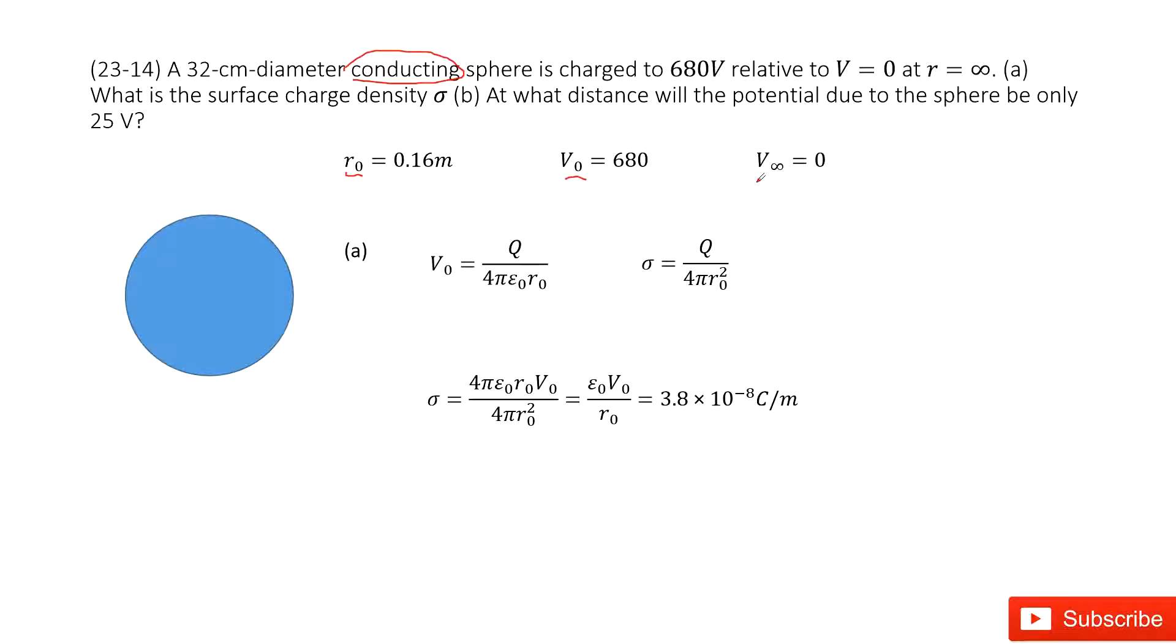And we know at infinity, the potential is equal to zero. The first question asks you for the surface charge density. As we know in this textbook, the electric potential at the surface just equals this term. Do you agree?